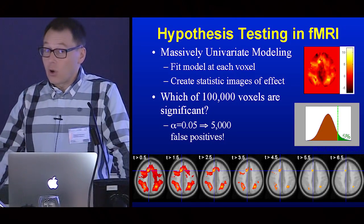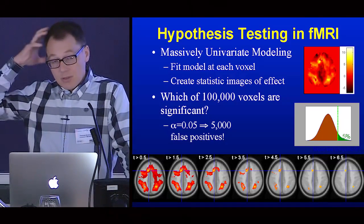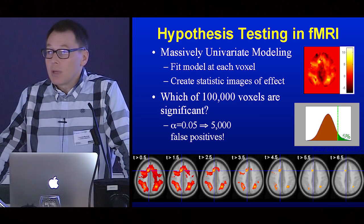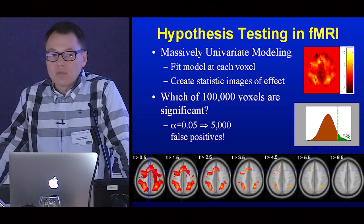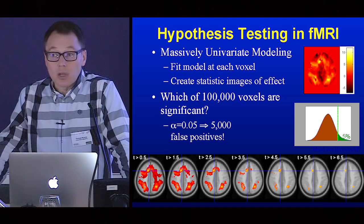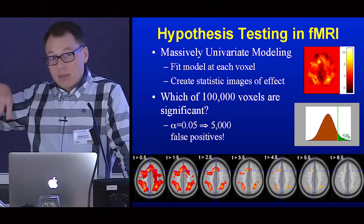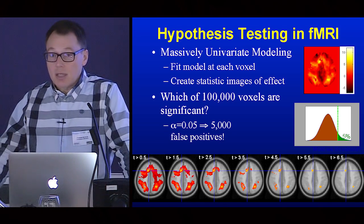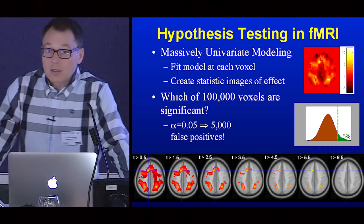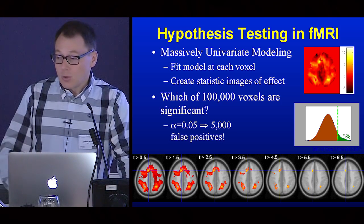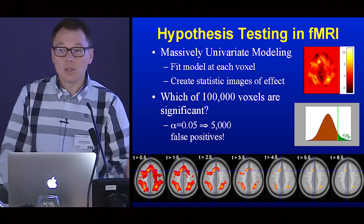This is a large data setting. We get anywhere from 100,000 to a million measurements inside the brain, but we use rather simple methods to analyze this data. We fit a univariate time series model at each point in the brain, trying to explain the anticipated variation induced by some experiment, and then test for the presence of a non-zero effect. Doing that at every single point in the brain gives us a statistic image — an image of statistics — where every point is, under the null hypothesis, a t-statistic following the standard null distribution.